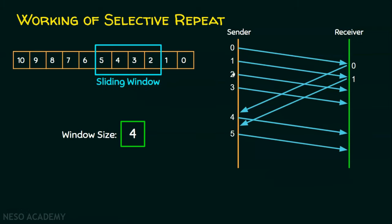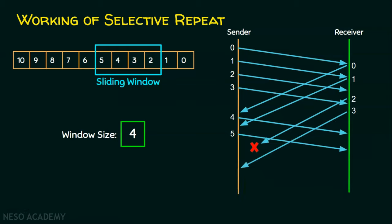Let's assume frame number 2 is corrupted or lost. The receiver will not send an acknowledgement for frame number 2. If this were go-back-N ARQ, the receiver would discard frames 4 and 5 already received, and the sender would retransmit all frames in the current window: 2, 3, 4, and 5. In selective repeat, however, the receiver keeps frames 3, 4, and 5 buffered. The receiver sends a negative acknowledgement for frame number 2 alone, and the sender retransmits only frame number 2.